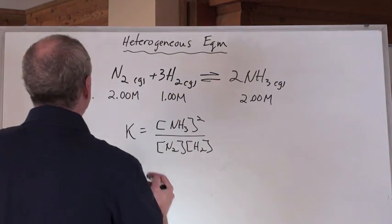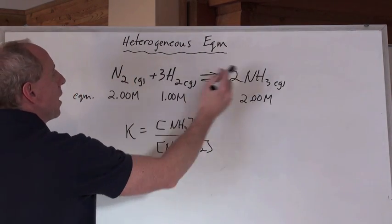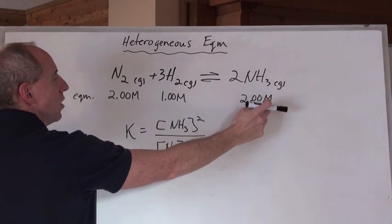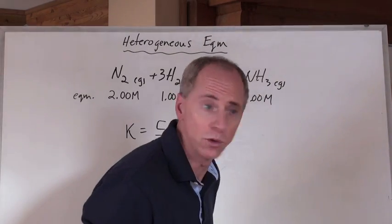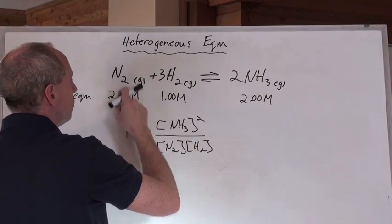I've given you the equilibrium concentration. So I say, here's a reaction that's occurring. It's at equilibrium, and here are the equilibrium concentrations in big M. Big M standing for moles per liter, right? So it's two moles per liter in this, one mole per liter here, and two moles per liter here.